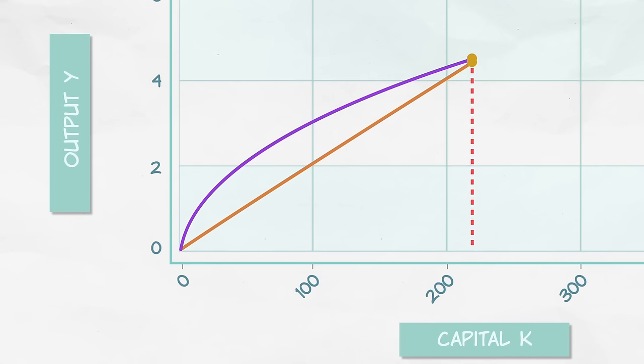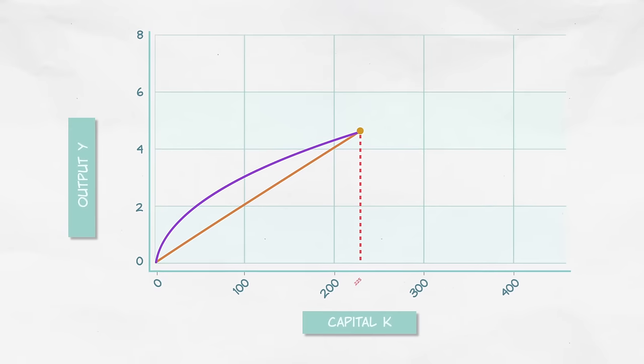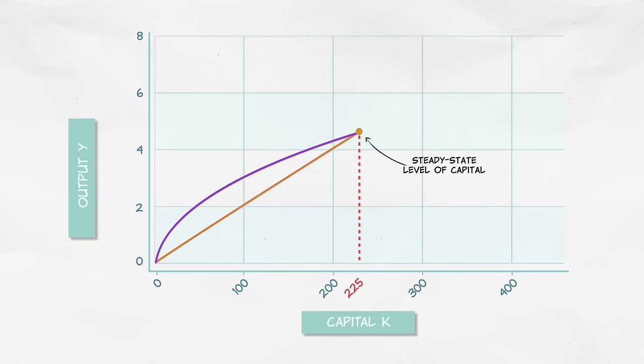When this happens, we have reached what is called the steady state level of capital. The steady state is the key to understanding the Solow model. At the steady state, investment is equal to depreciation. That means that all of investment is being used just to repair and replace the existing capital stock. No new capital is being created.